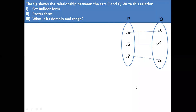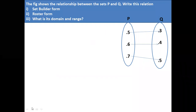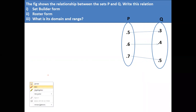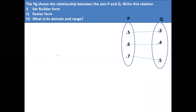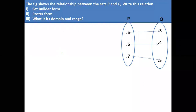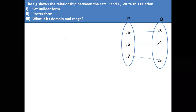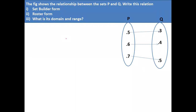In the previous class we were discussing about relations. A relation is nothing but a subset of Cartesian product. When you write a relation, you will have a set of first elements and a set of second elements. The set of first elements in the ordered pair in a relation R is called the domain.